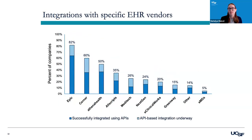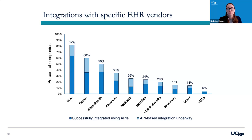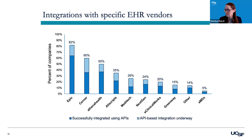Regarding specific EHR vendors the companies are integrating with: about 82% of surveyed companies said they were already integrating with Epic or had those integrations underway. Cerner is the next biggest at 60% integrating successfully or with integrations underway. About half were working with Athena Health, 35% with Allscripts, and then percentages start to drop from there.